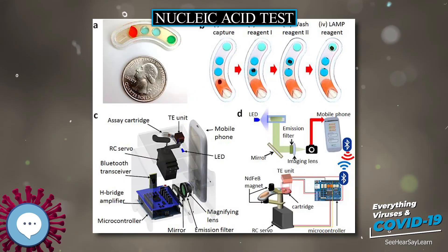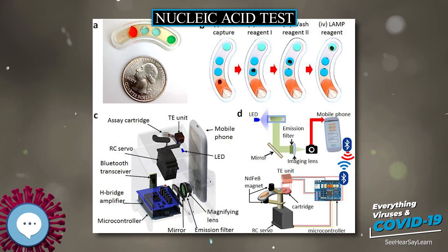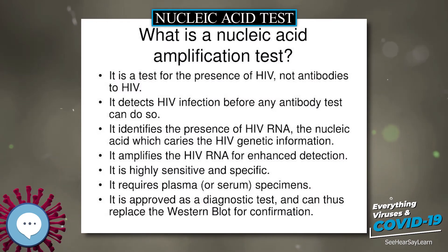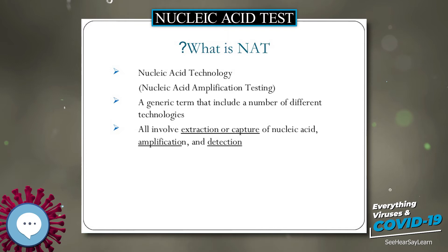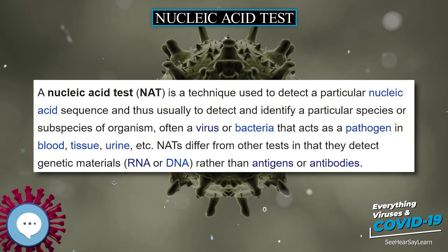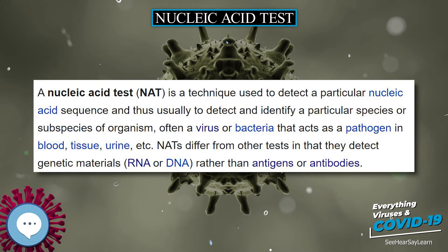They introduced a toehold exchange probe, which consists of a pre-hybridized complement strand C and a protector strand P. The complement strand is longer than the protector strand, leaving an unbound tail at the end. When the correct target X reacts with the toehold exchange probe, P is released and the hybridized product X is formed.